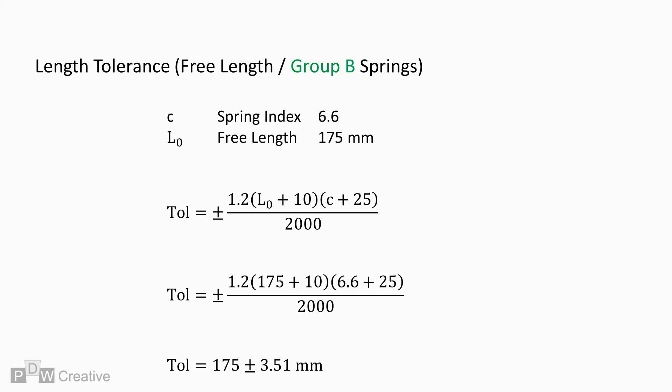And for Group B heat treated springs, a 1.2 multiplication factor is added to the equation. This gives a free length tolerance of 3.51 mm.